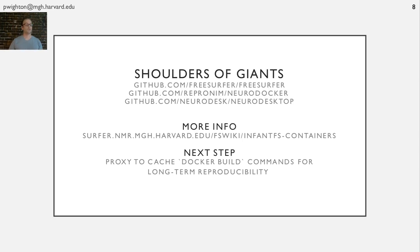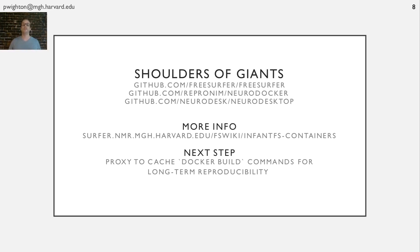Thank you very much. This work was only possible due to the wealth of open source software available in the neuroimaging community, so I'd like to express deep gratitude to anyone who's contributed to these specific repositories or to the open source community more generally. There's more info at the link on how we're using containers to increase the accessibility and reproducibility of this pipeline. And I'll end with a question: if we wanted to extend the timescales over which we're thinking about reproducibility to say 10, 20, 50, or even 100 years, what would we have to do? For long-term reproducibility, or if you're operating in a heavily regulated environment, it might make sense to cache the network traffic during Docker build operations.